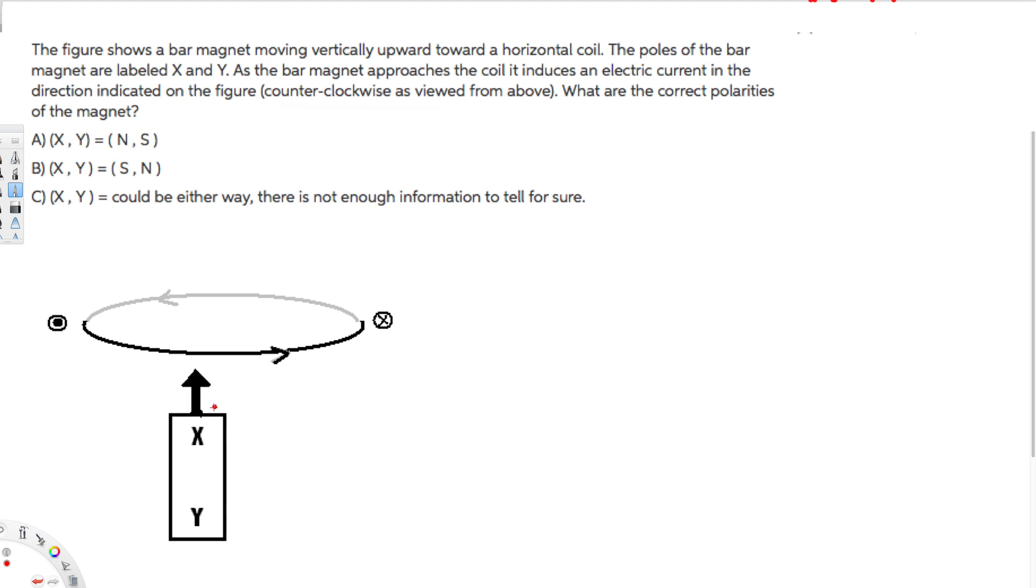The original field is going to have the south pole in the X location and north pole in the Y location. So the original field's south pole and north pole is going to be X and Y. X is going to be south pole, Y is going to be north pole.